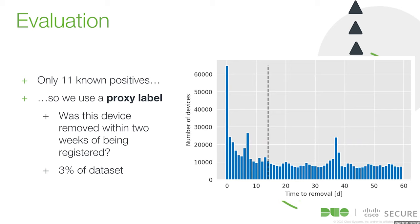As Becca mentioned, this is still a very sparse label population. Within our dataset, we have 11 known positives out of about 6 million new phones registered in the first half of this year. So instead of looking at just those, we look at a proxy label of when that device was removed after the fact. If a device is removed early on, it's probably because of the incident response team. That could also happen because someone is testing a new workflow, but we can say that's probably a decent proxy label — it's about 3% of our dataset, and that's probably an upper bound for how many device registration attacks there have been this last year.